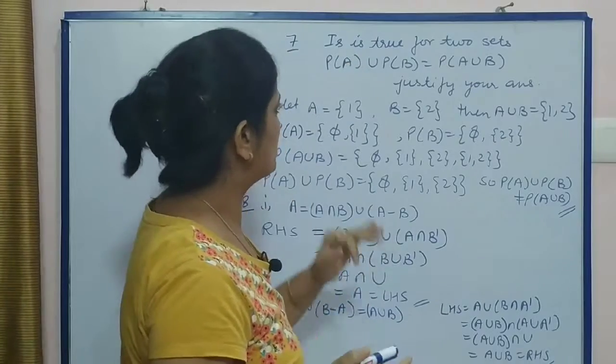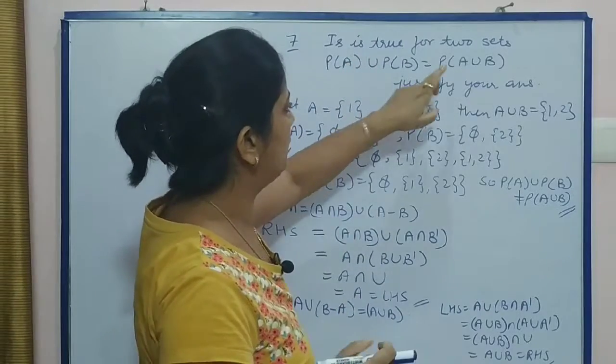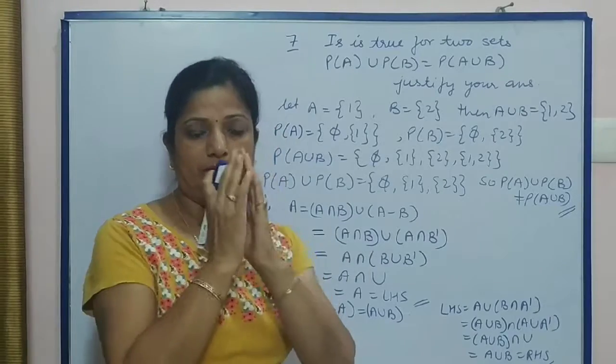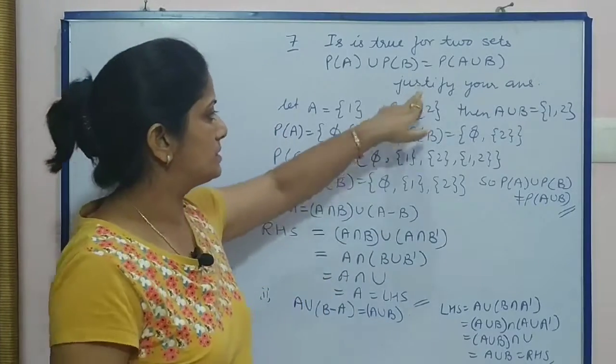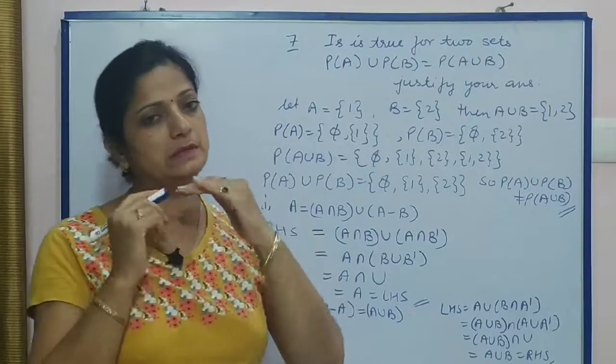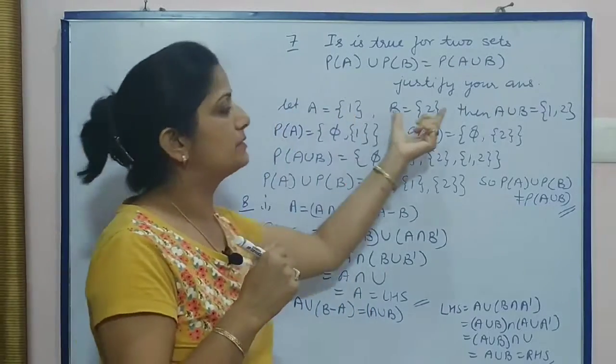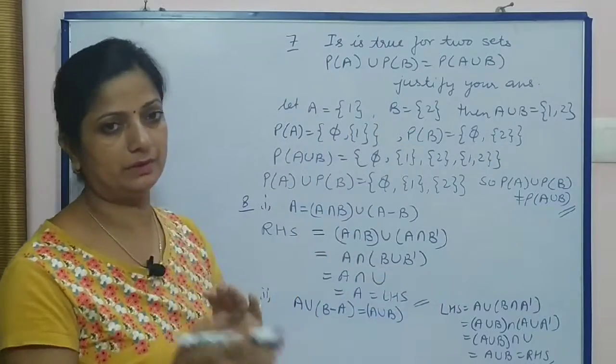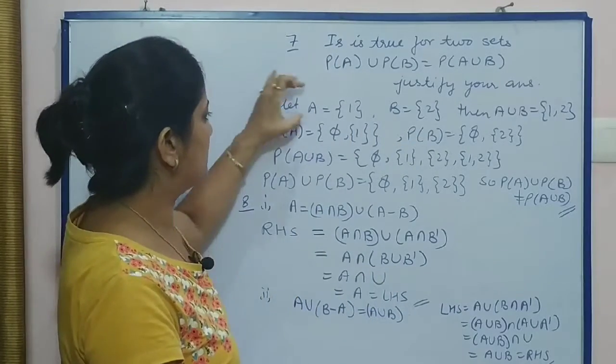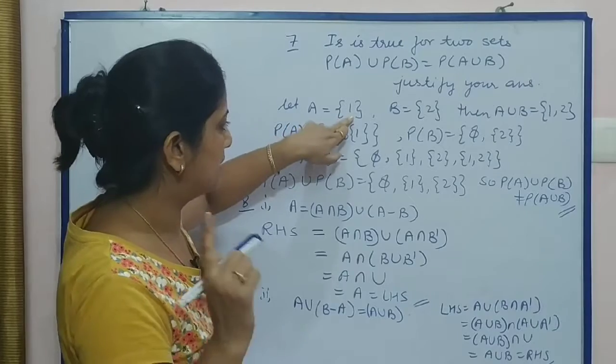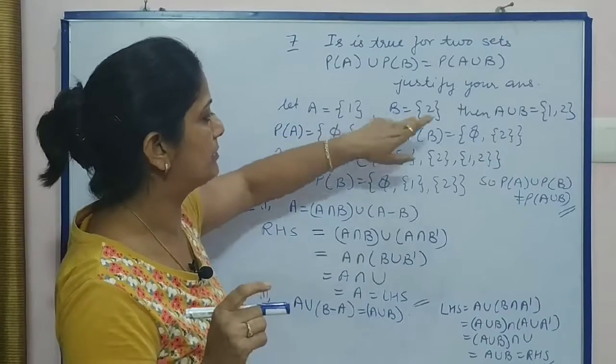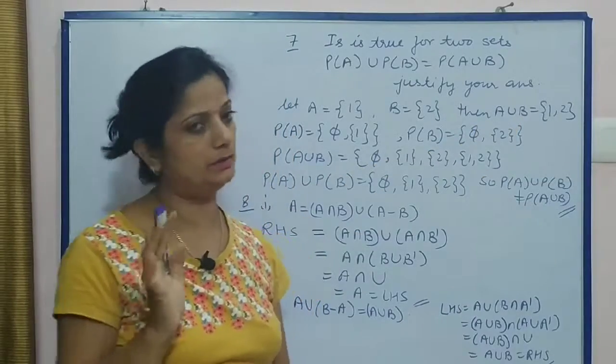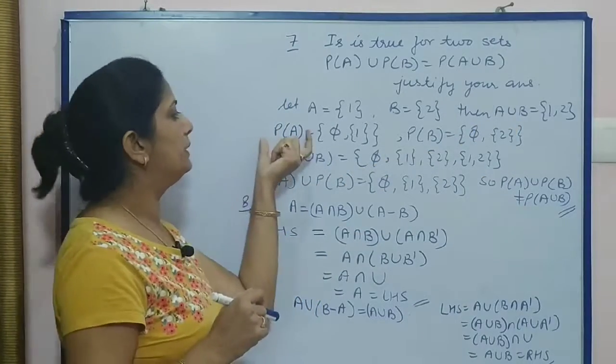Now question number 7 is: Is it true for two sets that P(A) union P(B) equals P(A union B)? Justify your answer. When in a question it says 'justify your answer,' you will take particular sets. You have to prove this result by taking particular sets. Suppose we take set A having single element 1, set B having single element 2, then A union B is {1, 2}.